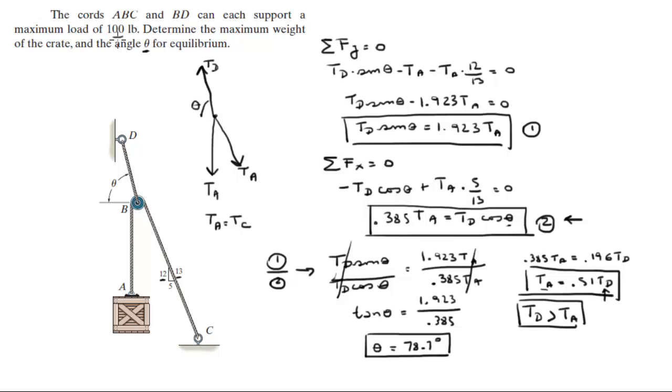But they told you that the ropes can only support a maximum load of 100 pounds. Since TD is the one supporting the maximum load, we set TD equal to 100 pounds. And if TD is equal to 100 pounds, we plug it into here, and we get that TA is equal to 51 pounds.